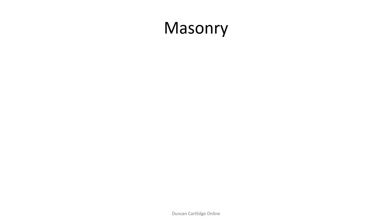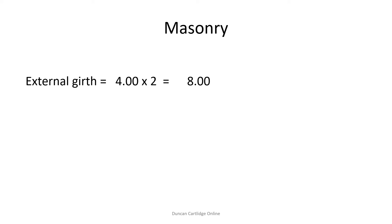Therefore, using the example on slide number 6, first calculate the external girth, and then deduct an allowance for each of the external angles to arrive at the mean girth or centreline.